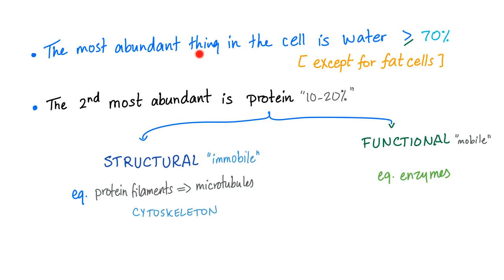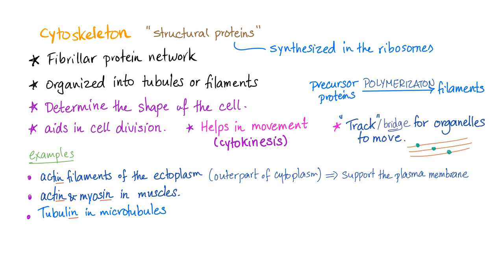The most abundant thing in the cell is water. The second most abundant thing is protein — we have structural proteins and functional proteins. Structural proteins form the cytoskeleton, which is a network of fibrillar proteins synthesized in the ribosomes, organized into tubules called microtubules or filaments called microfilaments. They determine the shape of the cell, aid in cell division, and form bridges for organelles to move. Examples: actin in microfilaments and tubulin in microtubules.